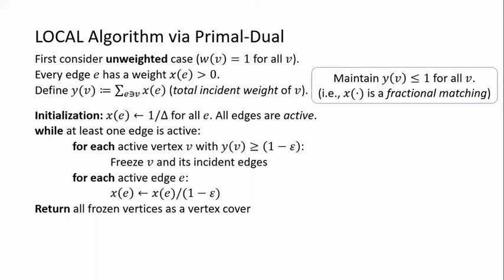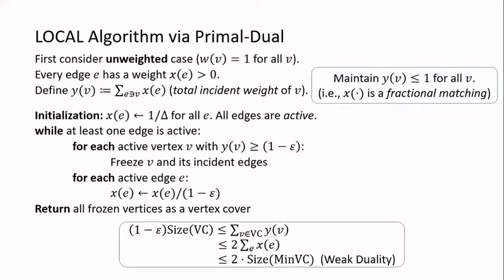Then we return all the frozen vertices as a vertex cover. To analyze the approximation ratio, we sum up the y values for all frozen vertices — each is at least 1 minus epsilon. Their sum is upper bounded by 2 times the total value of the fractional matching, since every edge is counted at most twice. By LP duality, the value of the fractional matching is not larger than the minimum vertex cover. So this shows that our solution is a 2 plus order epsilon approximation.